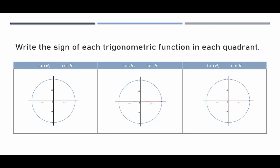What are the signs of each trigonometric function in each quadrant? In right triangle trigonometry everything is positive, but in the coordinate plane x can be positive or negative and y can be positive or negative. The radius r will always be positive, so the signs of the trigonometric functions are dependent on the signs of x and y.